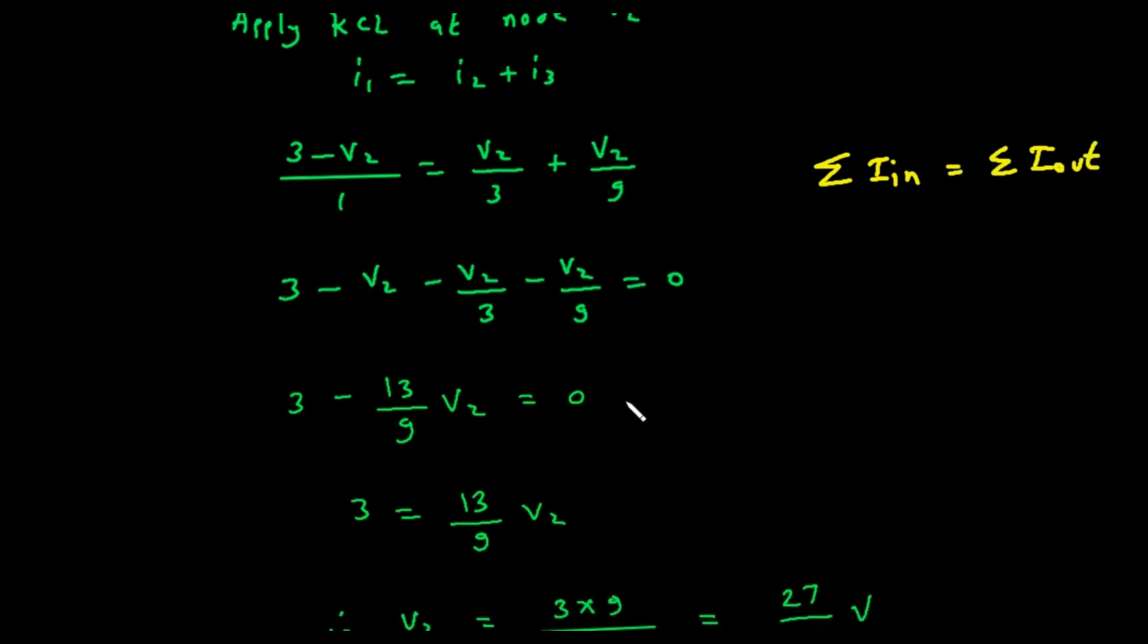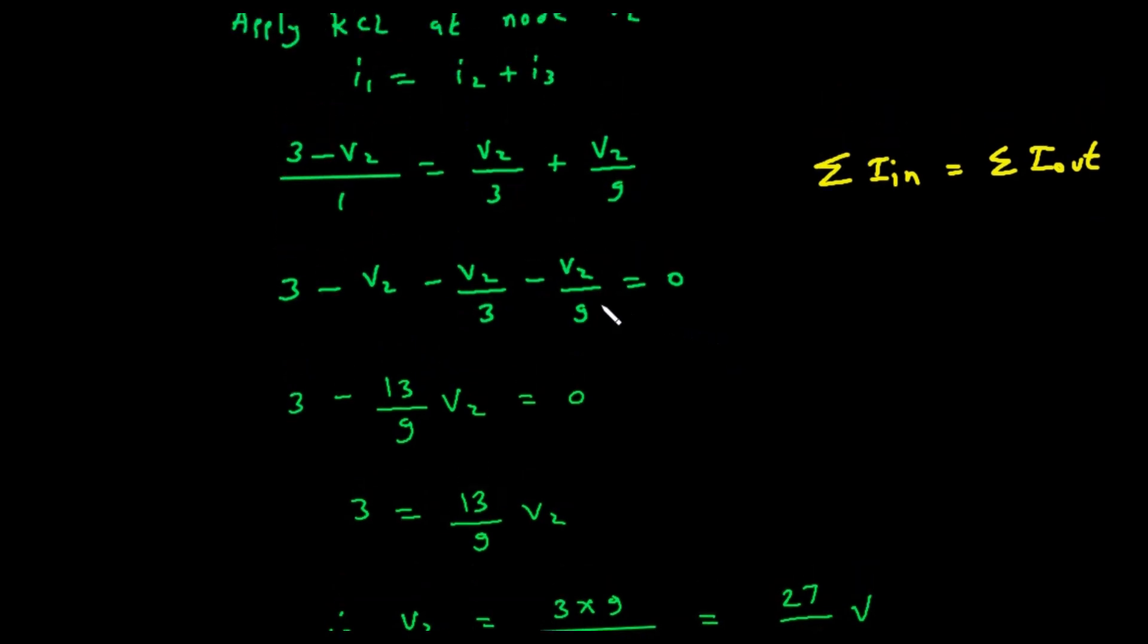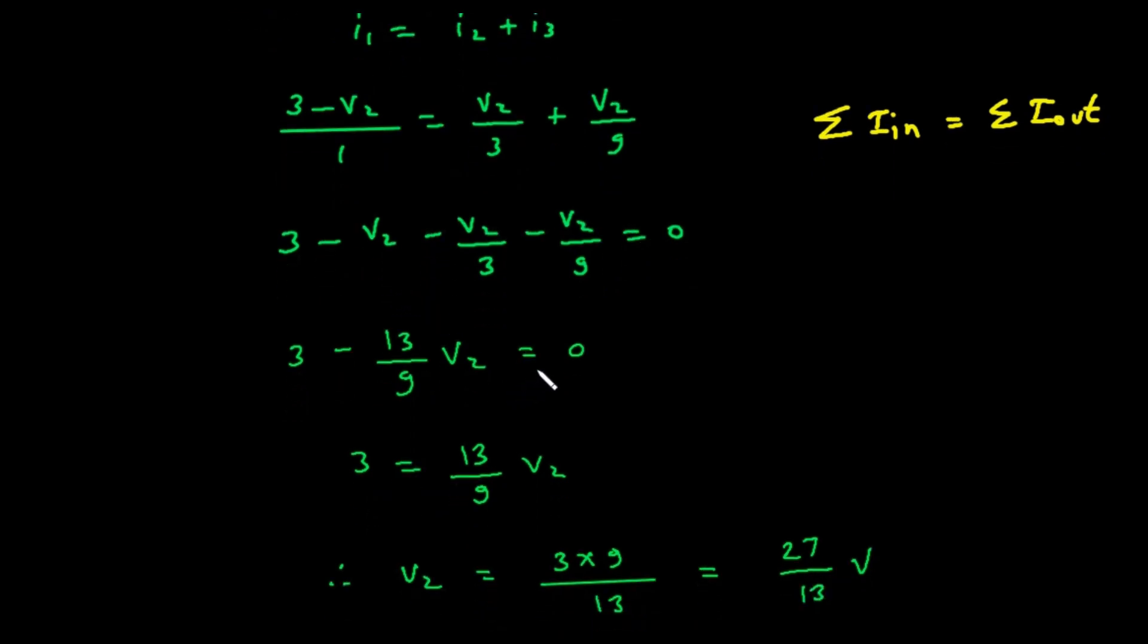Let's solve this equation for V2. The left side is simply 3 minus V2. So, 3 minus V2 equals V2 divided by 3 plus V2 divided by 9. Let's move the minus V2 term from the left side to the right side by adding V2 to both sides. This gives us 3 equals V2 plus V2 divided by 3 plus V2 divided by 9. To combine the V2 terms, we need a common denominator, which is 9.